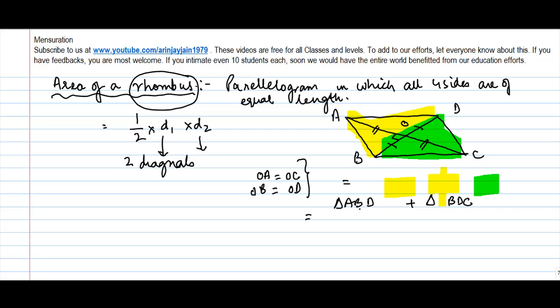Now what is the area of triangle ABD? It is going to be half into base. What is the base of triangle ABD? It's BD into height, and what is the height? Height is equal to OA. Plus half into the base of triangle BDC, the one in the green mark. Again it is BD into height, and height is OC. Now, if you see, half BD is here, half BD is here, so you can write this as half BD into OA plus OC.